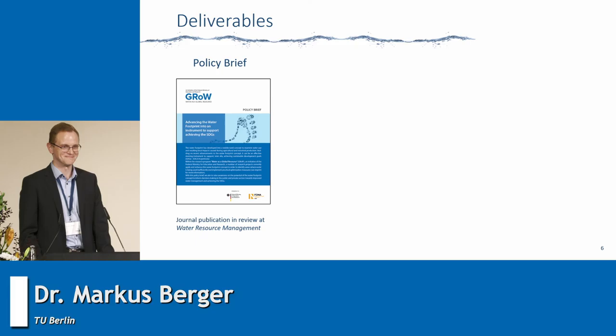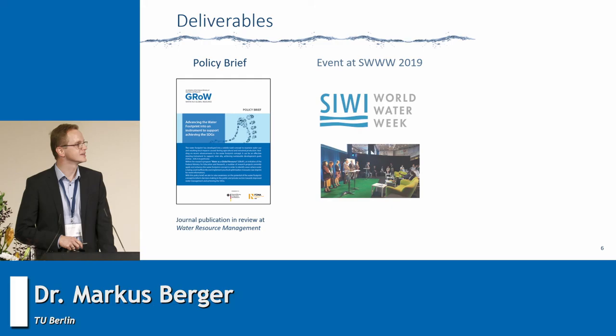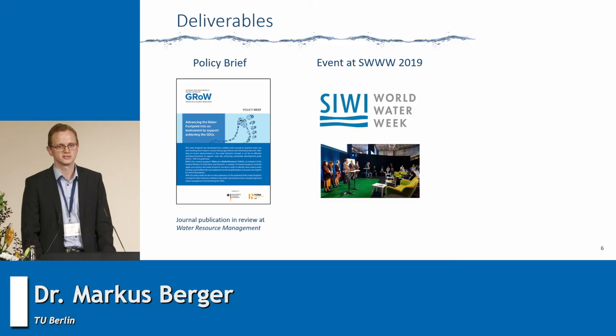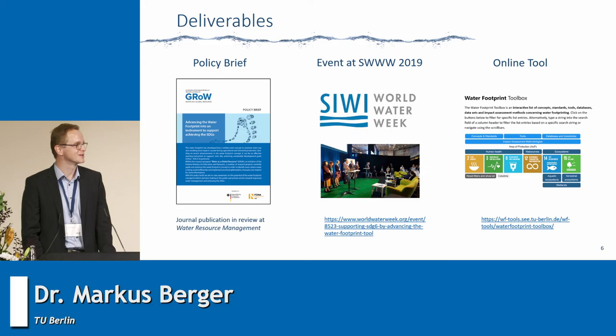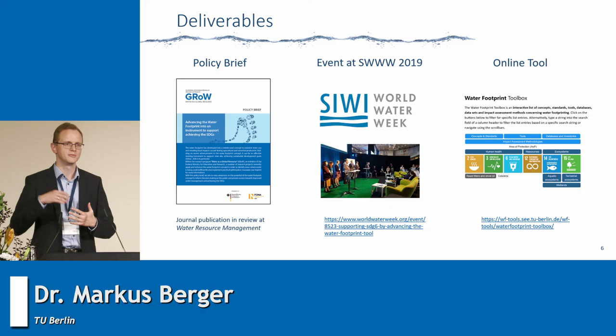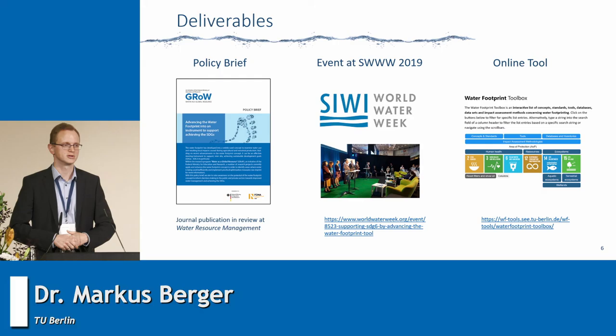In terms of deliverables, we have a policy brief which you can download, and it is also under revision for journal publication. We had an event at the World Water Week last year presenting these recommendations, with projects from the GROW community presented in Stockholm, along with stakeholders from industry and the Water Footprint Network. Finally, we also have an online Water Footprint Tool — since there are different methods, impact assessment methods, labels, and standards, the tool helps you find the right approach for your specific question, whether assessing ecosystem impact or finding a standard for industry or agriculture. These are the main deliverables from this cross-cutting topic.